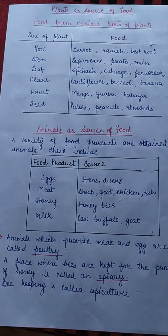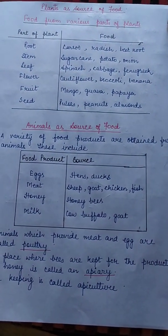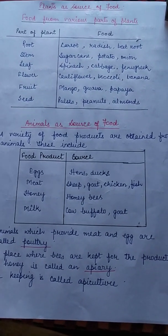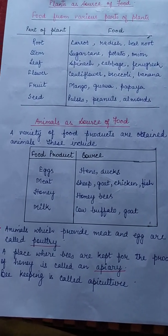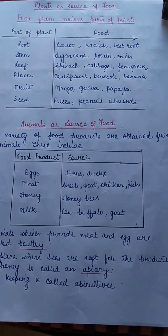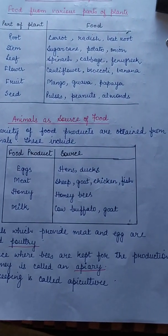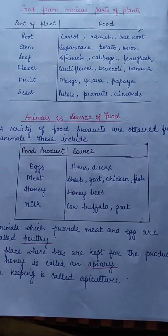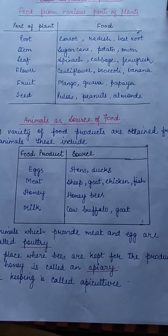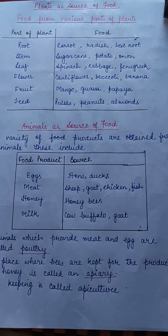Plants as a source of food. Children, you know that green plants can prepare their own food. For this reason they are also known as producers. They prepare more food than what they need themselves. This extra food is stored in different parts of the plant body. Let us see which plant parts provide these food items.